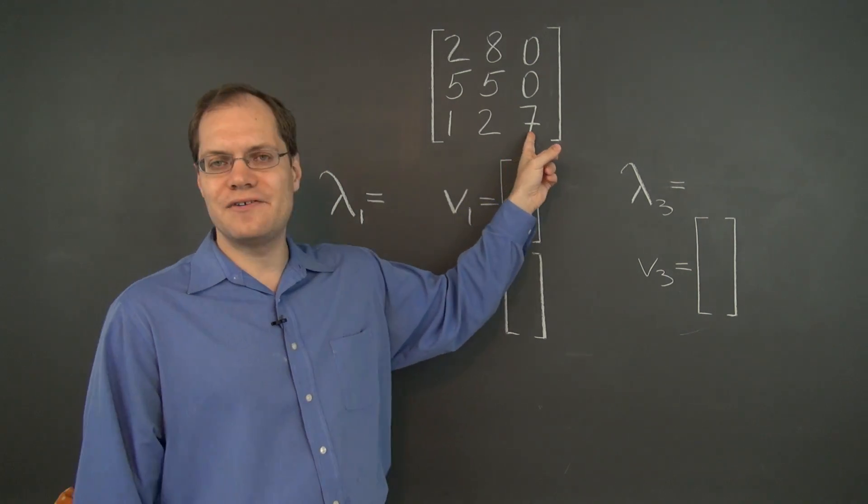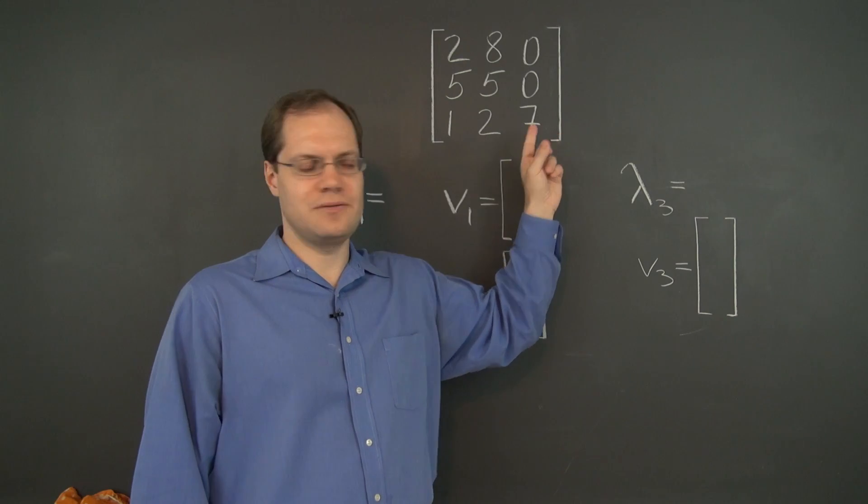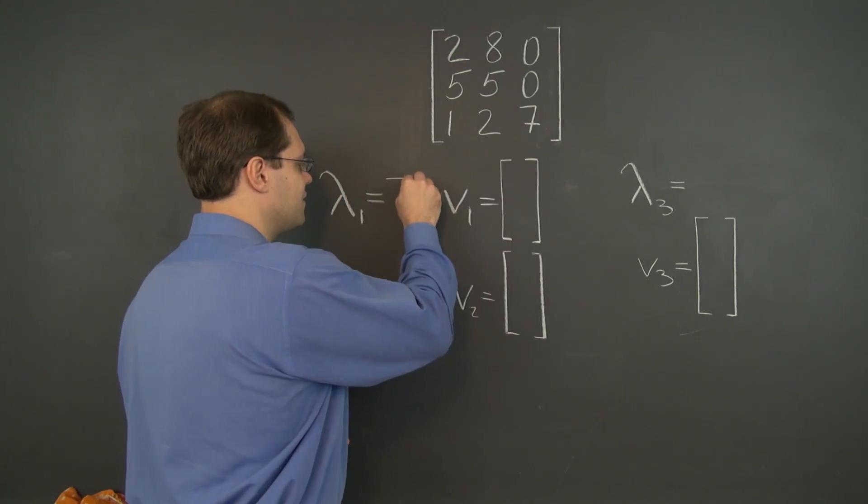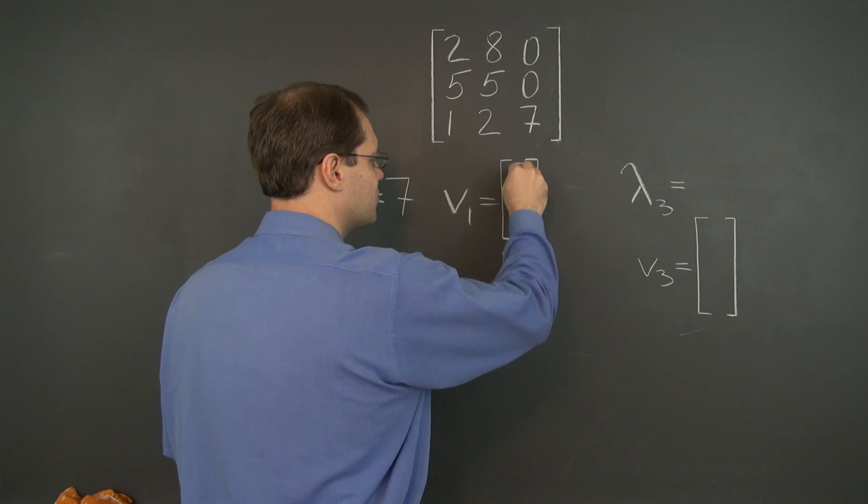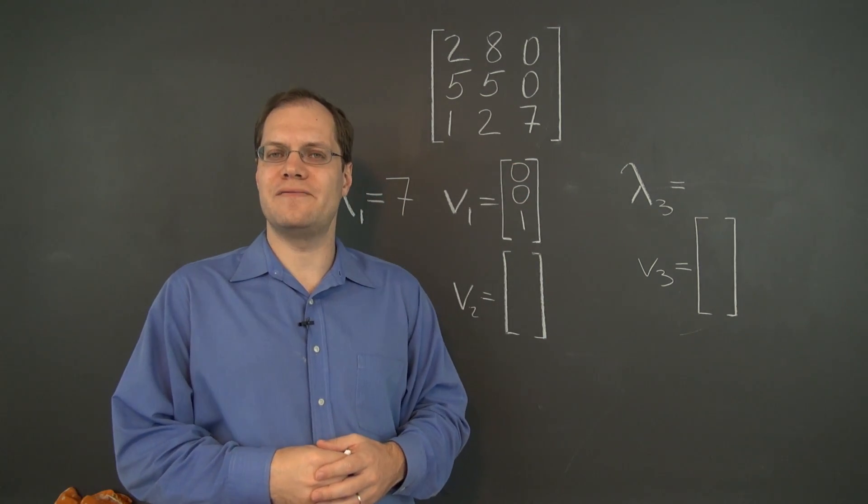First we see 7 alone in its column and in the diagonal position. Therefore 7 is an eigenvalue, and (0, 0, 1) is the corresponding eigenvector.